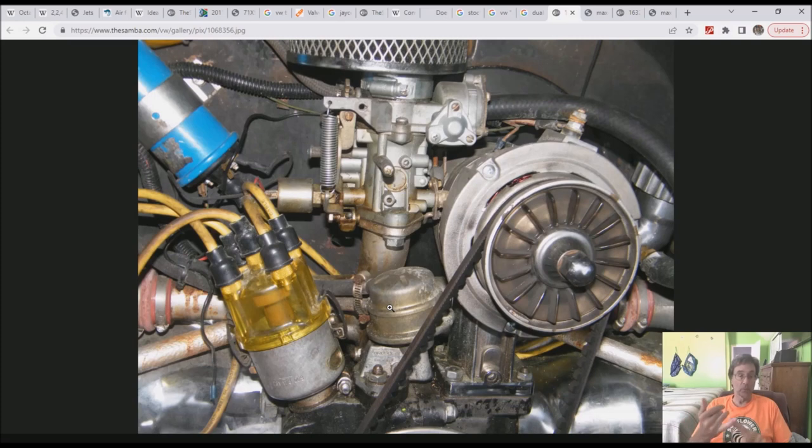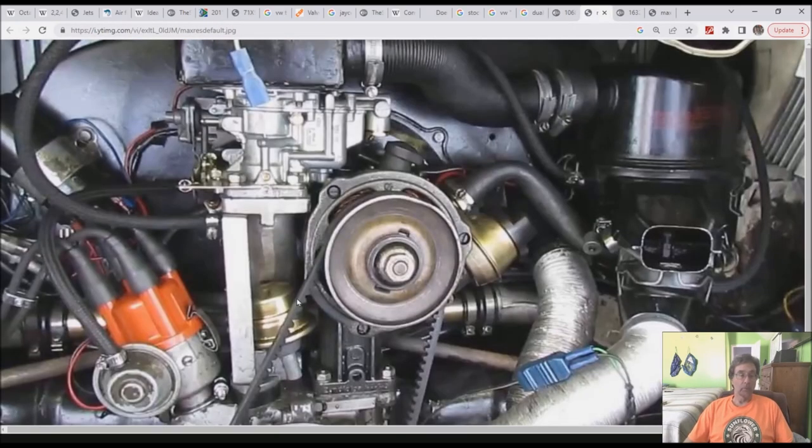You might step up to a dual system like this progressive power carb. I think it's a Weber, you can tell by the bar right there. It's got the same problem - right angle bends down in here. It's got an aluminum manifold which is nice, so at least it has a shot at warming up the manifold. Same basic inherent problem with these long runners.